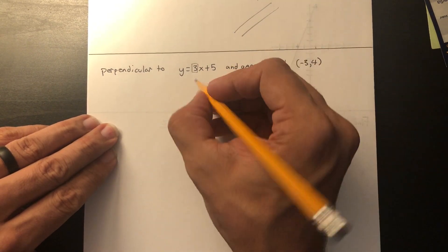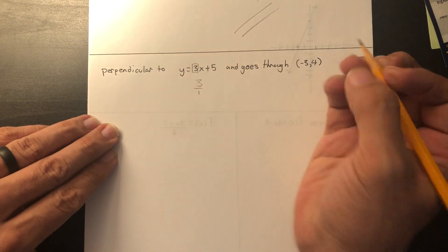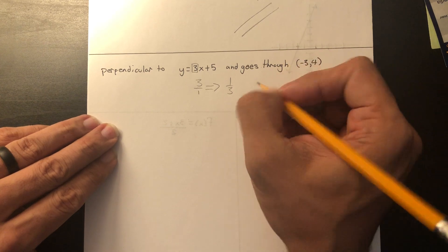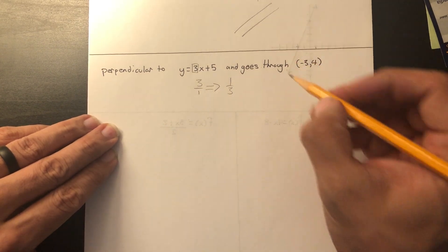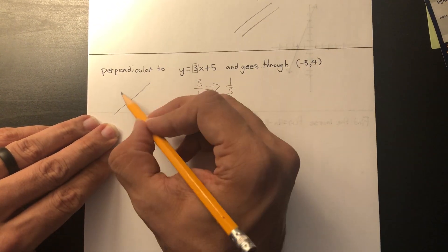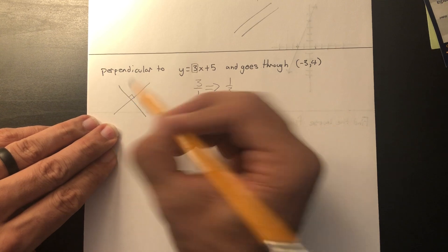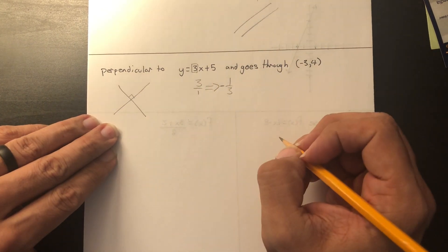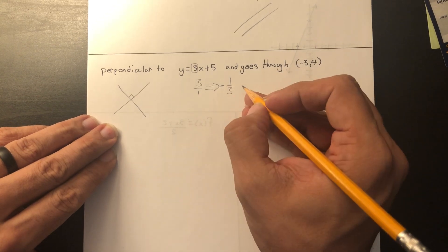A perpendicular slope is not only the reciprocal, but it's also the opposite sign. So it's a complete opposite number. Here we want it perpendicular to this, so this slope has to flip. How is it going to flip? Well, a 3 is actually 3 over 1. So if you flip it, you're going to end up with 1 over 3. And it has to be a different sign.